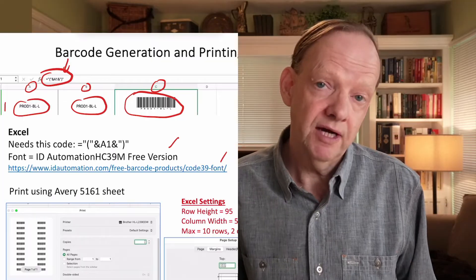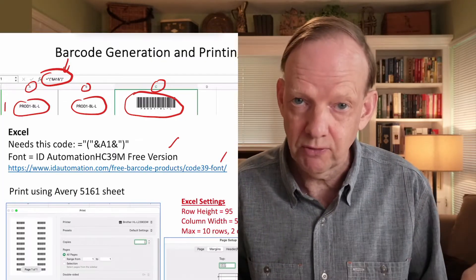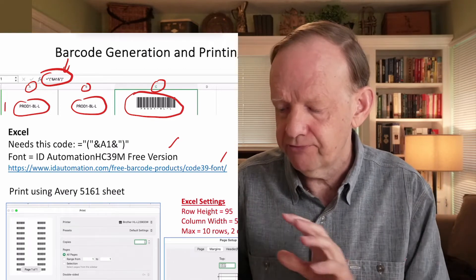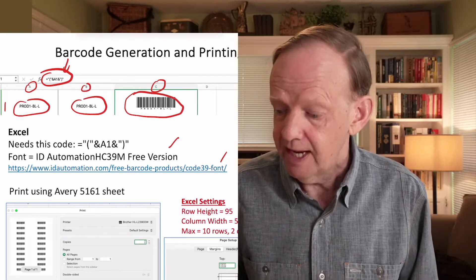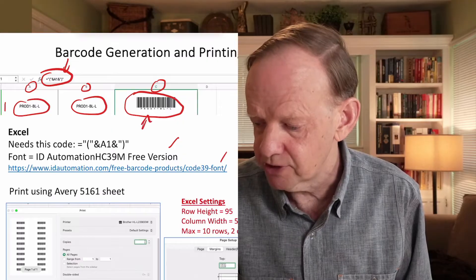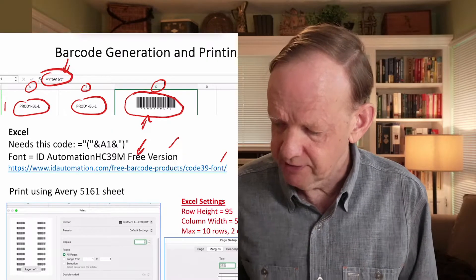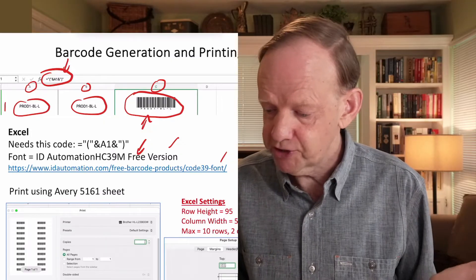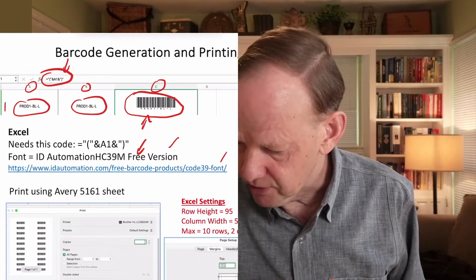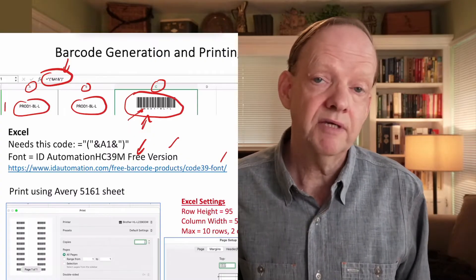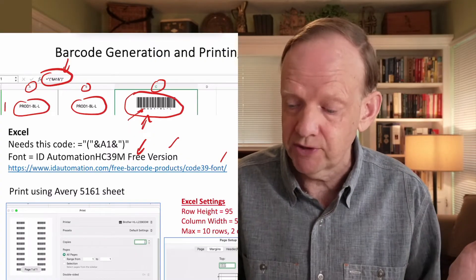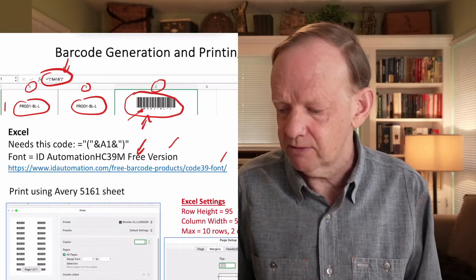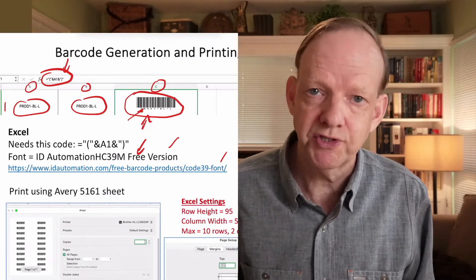The second thing we have to do is give it a font. The barcode symbol is generated by a font. I went to this website here, I picked out for free a font called ID Automation H39M. You open that file, you double click on it, it installs, you quit Excel, go back into Excel, and therefore the font should show up in your font list. If I then make this a font equal to that one I selected, then I get a barcode.